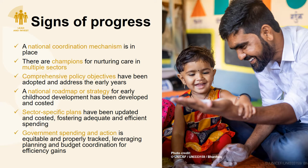To summarize, the key signs of progress for the Lead and Invest pillar of the Nurturing Care Framework include: having a national coordination mechanism in place, having champions for nurturing care across multiple sectors, having comprehensive policy objectives addressing the early years, having a national roadmap or strategy for ECD that is developed and costed, having sector-specific plans that are updated, costed, and fostering adequate and efficient spending, and being able to track government spending and foster coordination across planning and budgeting across all sectors.